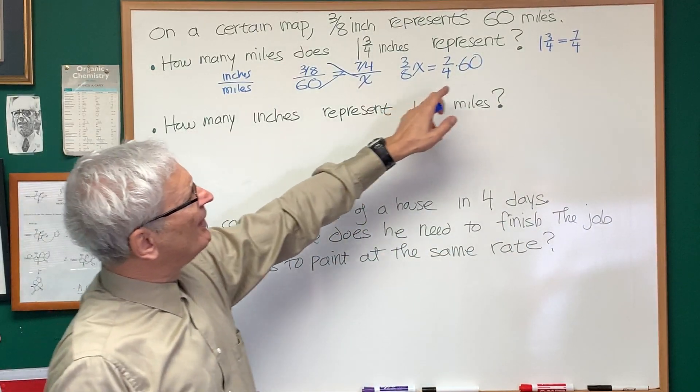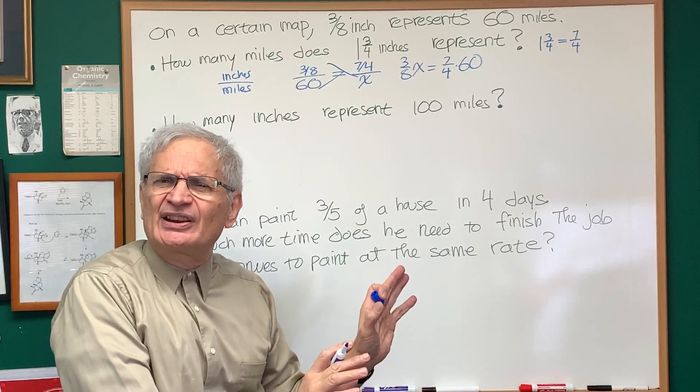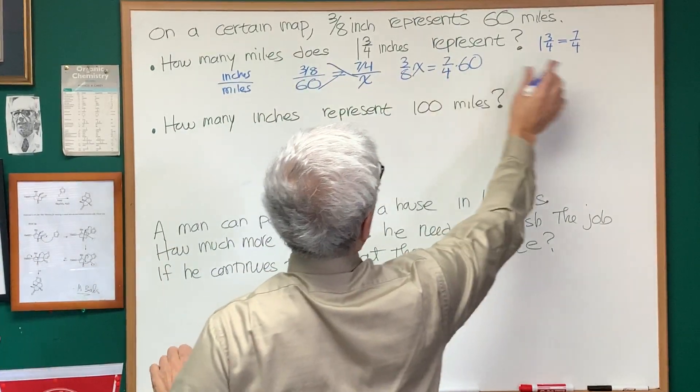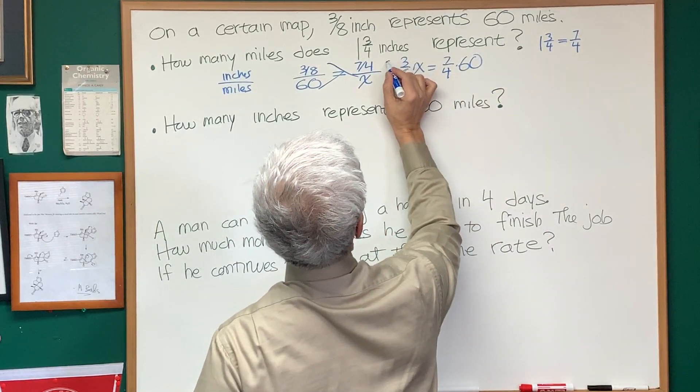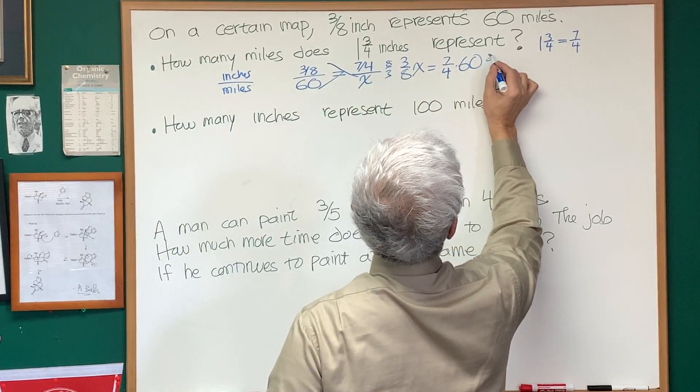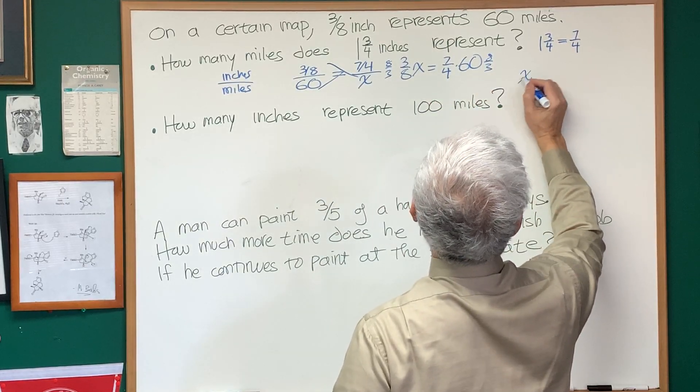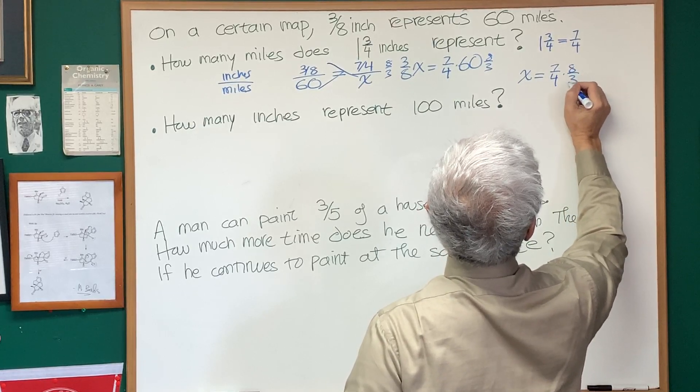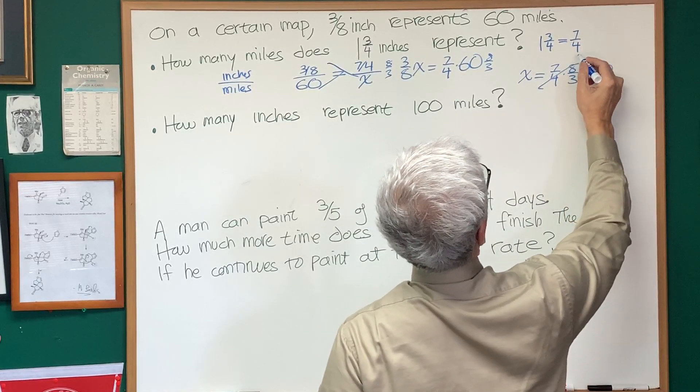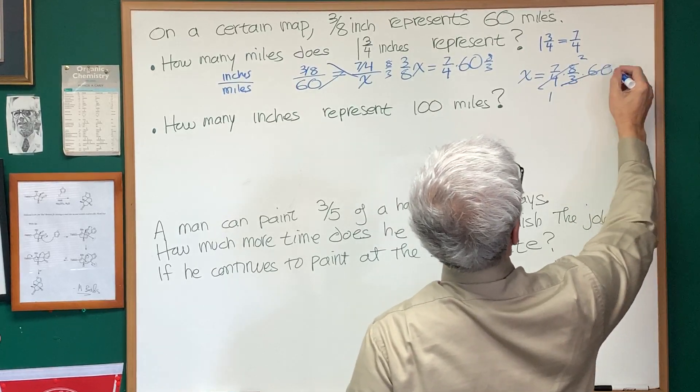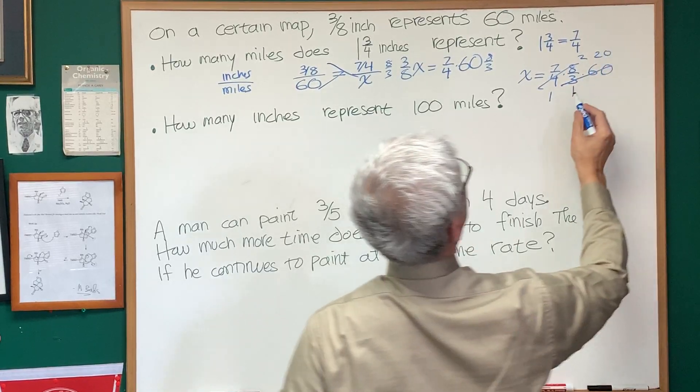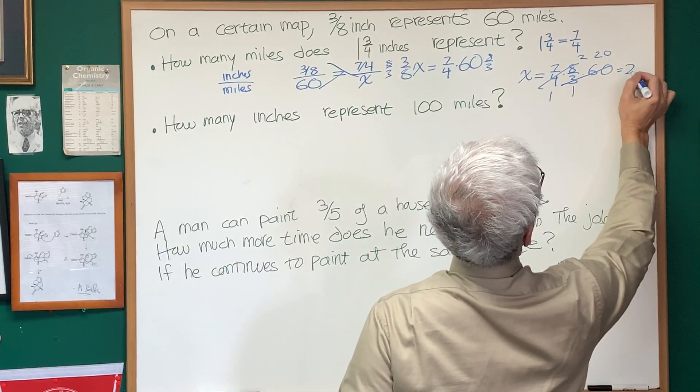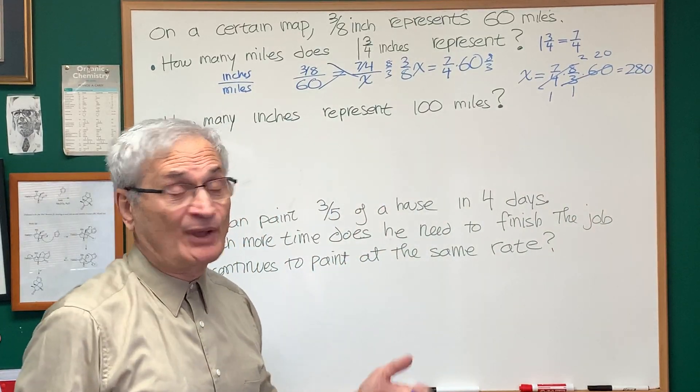And instead of multiplying seven-fourths times 60, it's good to leave the calculations unfinished until we have everything evaluated. We want to multiply both sides by eight-thirds, and we'll get the solution x is equal to seven-fourths times eight-thirds times 60. And we see that four goes into eight twice, three will go into 60 twenty times. So we have seven times two is 14, 14 times two is 28, and times ten is 280.